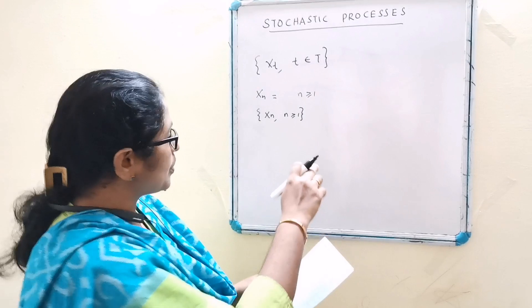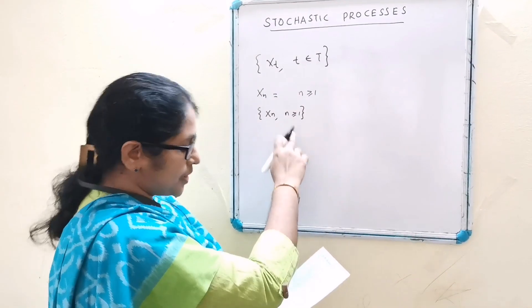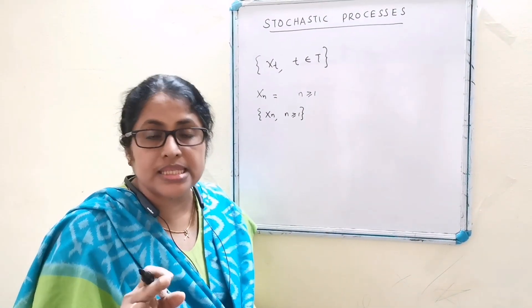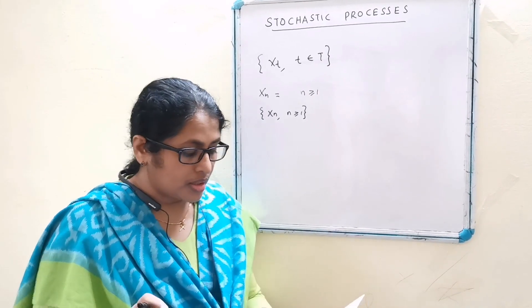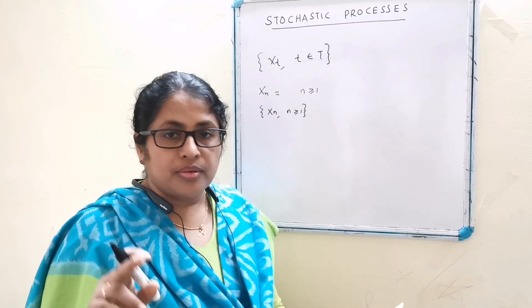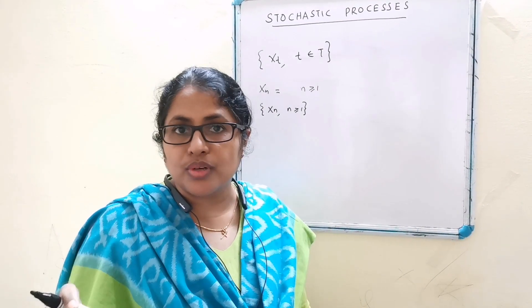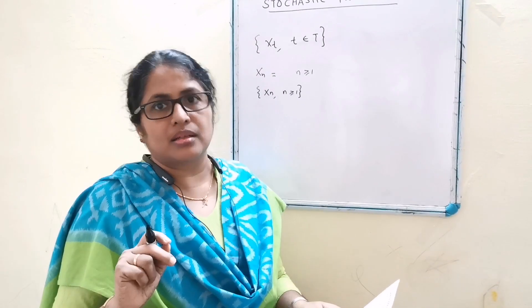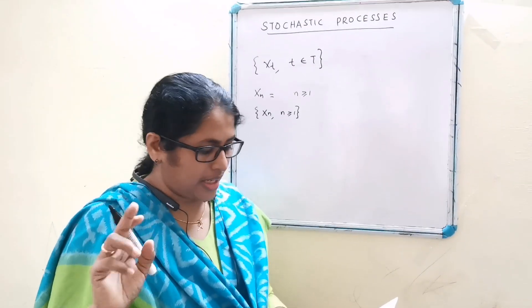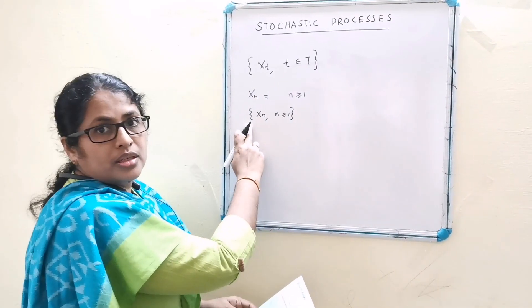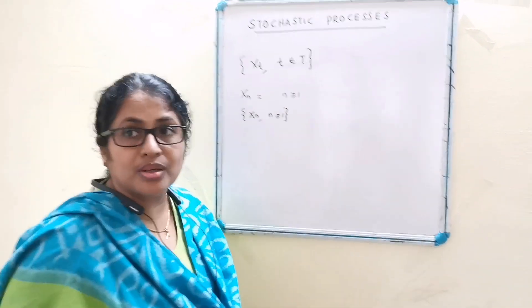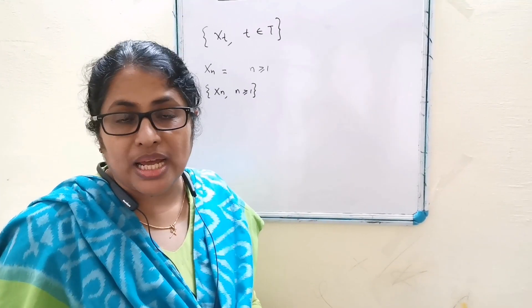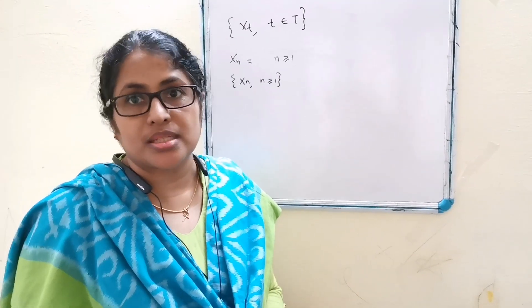Next, if x(n) is the number of sixes in the first n throws, then for distinct values of n = 1, 2, 3, etc., we get distinct binomial variables. Therefore, the sequence {x(n), n ≥ 1} constitutes a family of random variables and it is a stochastic process.